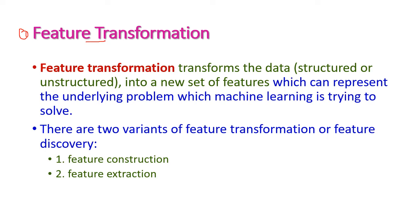Feature transformation is used to transform the data — whether it is structured data, unstructured data, or whatever data it may be. The data will be transformed into a new set of features. Based on the problem, we try to create new set of features — this is called as feature transformation.